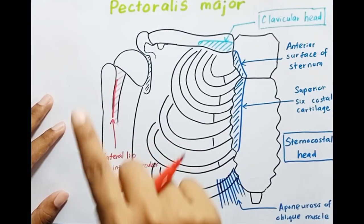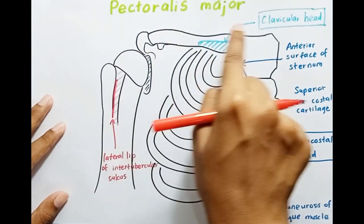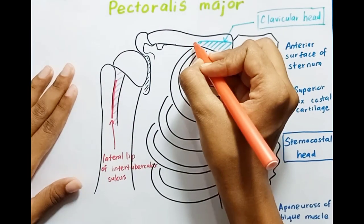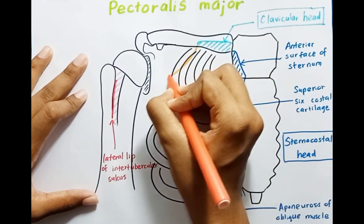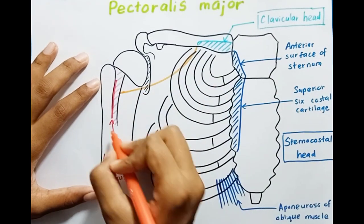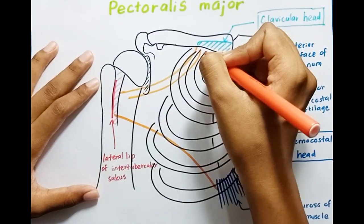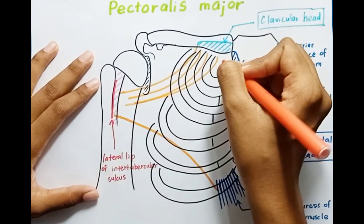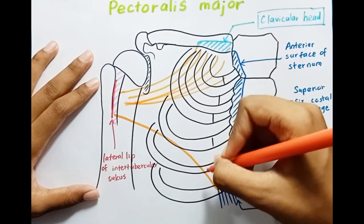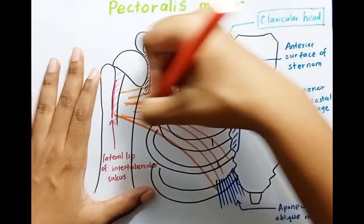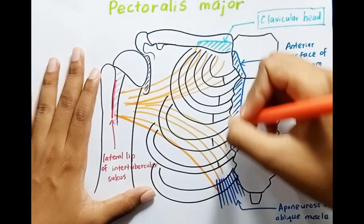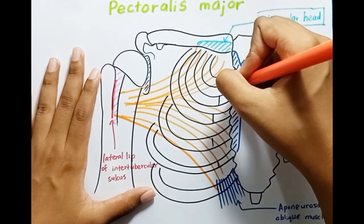This is the distal attachment of the pectoralis major muscle. So this muscle arises from the clavicular head and sternocostal head, then gets inserted into the lateral lip of the intertubercular sulcus.